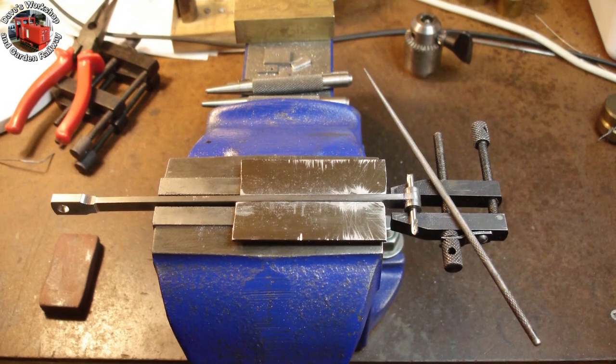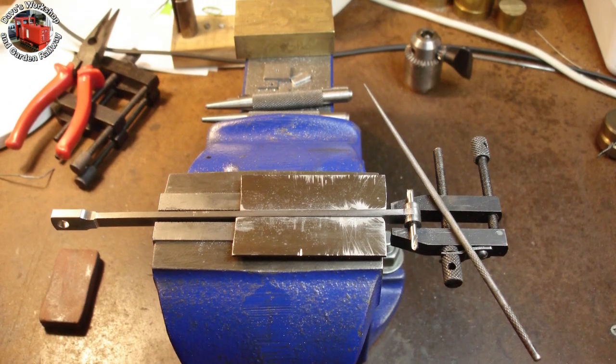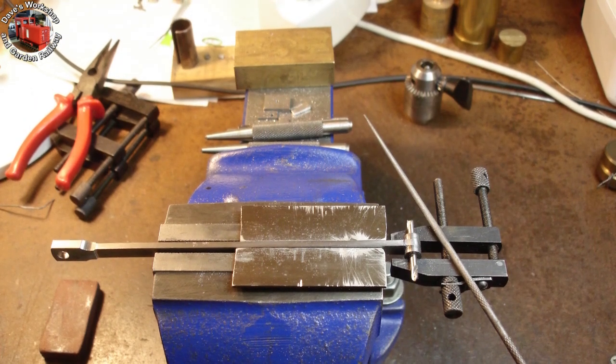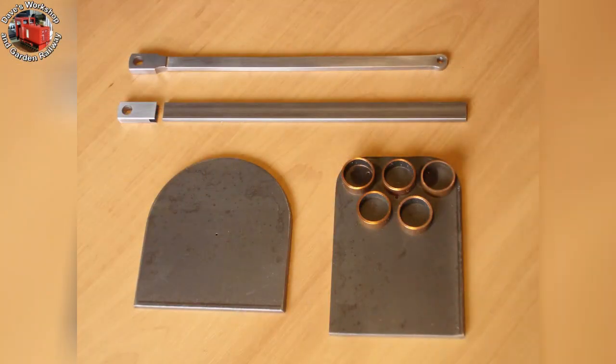Mainly filing along their diameter with them free spinning, but finished up across them for the intersection with the rod using the round needle file with them clamped in place. One finished connecting rod and the other to start.